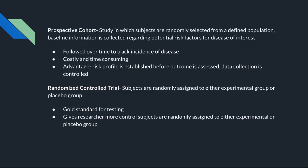Another research method is the prospective cohort, in which subjects are randomly selected from a defined population and baseline information is collected regarding potential risk factors for the disease of interest. These subjects are followed over time to track incidence of disease. This method is costly and time-consuming, but advantageous because the risk profile is established before the outcome is assessed and data collection is controlled.